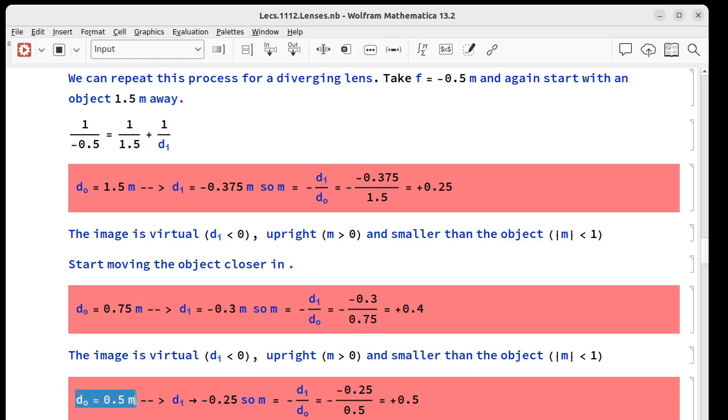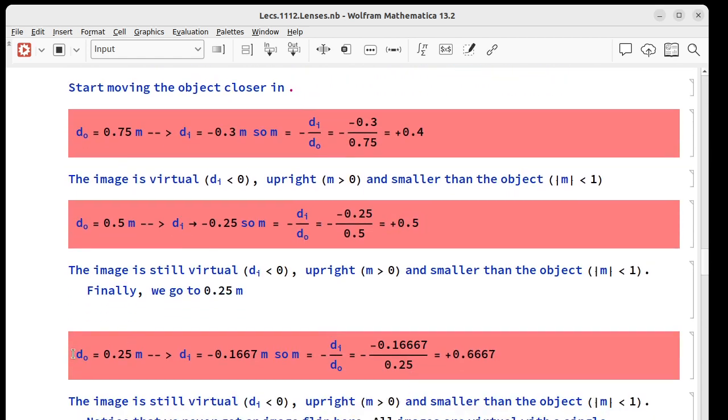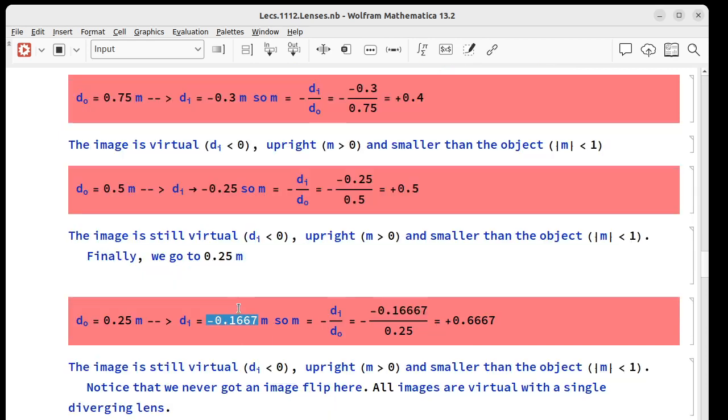We keep moving into 0.5 meters. We get an image distance of negative 0.25, so still virtual, still upright, still smaller than the object. Finally, we go into 0.25 meters. Notice we're getting the same results we got for the diverging mirror. We still get a virtual image, upright image, and smaller than the object. So all the images are virtual if you have a single diverging lens or a single diverging mirror.